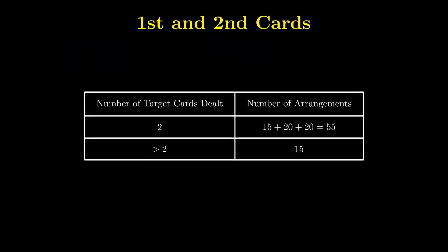For cases 1, 2 and 3, we can stop dealing, so there are 55 scenarios in which we can stop dealing after we have 2 target cards. But for case 4, we need to continue dealing.